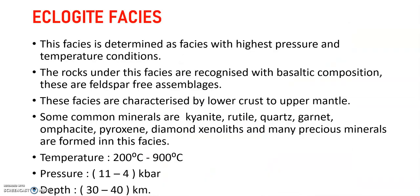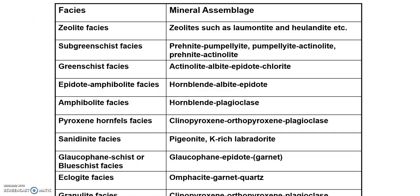Eclogite facies is termed the facies with the highest pressure and temperature conditions. The rocks under this facies are recognized with basaltic composition and are feldspar-free assemblages. This facies is characterized by lower crust to upper mantle conditions. Some common minerals are kyanite, rutile, quartz, garnet, omphacite, pyroxene, and diamond. Kimberlite pipes bearing xenoliths are also formed in eclogite facies, and many precious minerals are formed here. It occurs at temperatures of 200°C to 900°C, pressures of 11 to 14 kilobars, and depths of 30 to 40 kilometers.